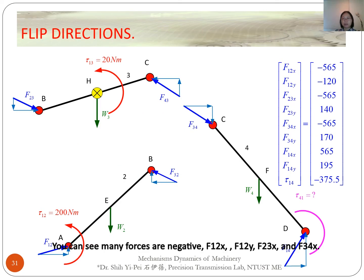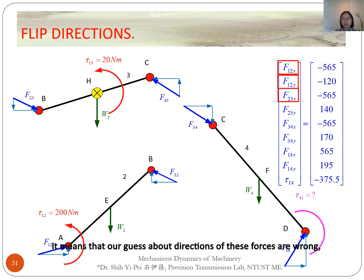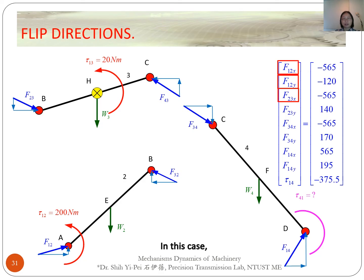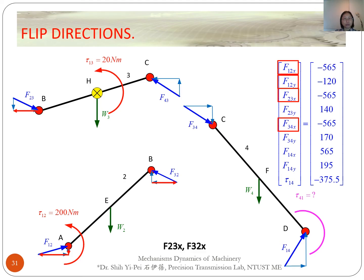You can see that many forces are negative — F12x, F12y, F23x, and F34x. This means that our guesses about the directions of those forces were wrong. So we need to flip them to get the correct directions. In this case, we flip F12x, F12y, F23x (and equivalently F32x), and F34x (and equivalently F43x).